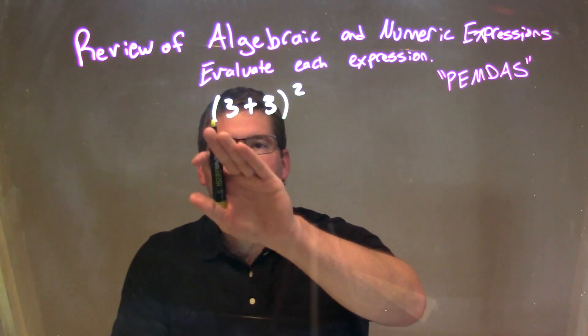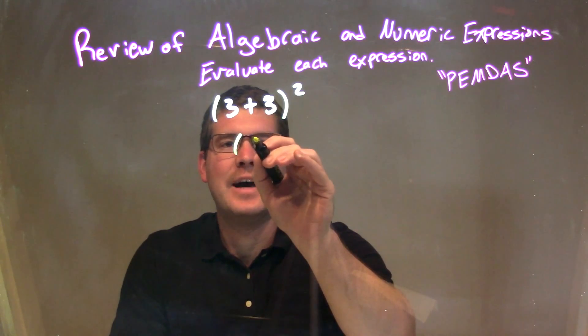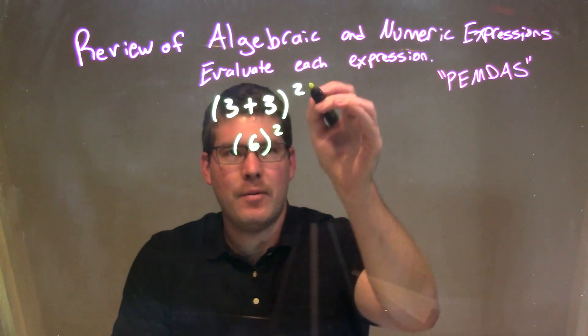So, parentheses, inside, then we have 3 plus 3. 3 plus 3 comes out to be 6. And we're still bringing out a square.